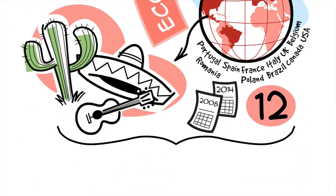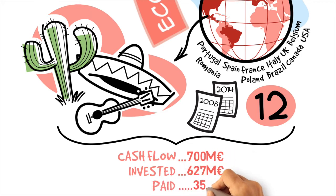With the results generated in these countries, EDPR achieved an operational cash flow of 700 million euros, invested 627 million euros, and paid 35 million euros in dividends in 2013 to their shareholders.